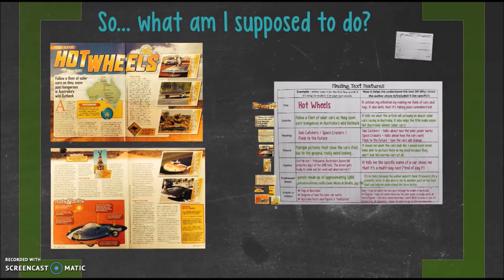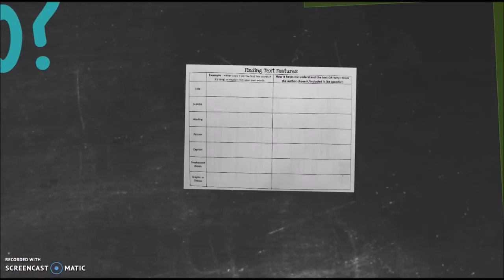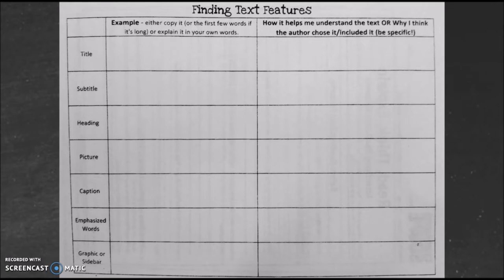Now you're going to have a handout called Finding Text Features. How am I going to work this out, Mr. Gibbs? Well, it's going to look like this. You're going to have title, subtitle, heading, picture, caption, emphasized words, graphic or sidebar. On one side, you're going to have the example. Either copy it or the first few words if it's too long. And explain or explain in your own words. Now, how did it help you understand the text or why you think the author chose to include it? I want you to be specific. Now you were like, what, Mr. Gibbs? I'm still a little confused. Well, let me give you some help.